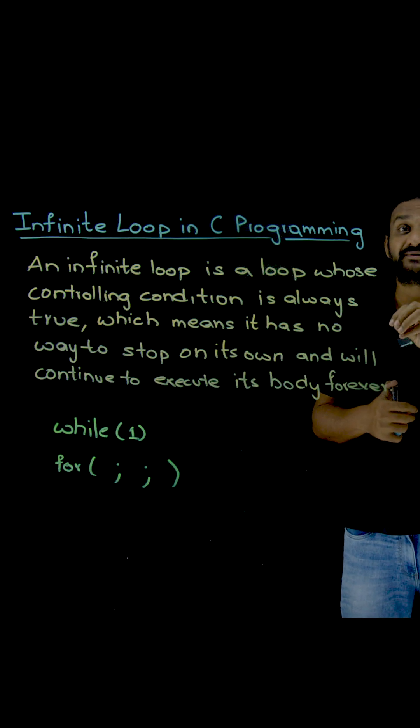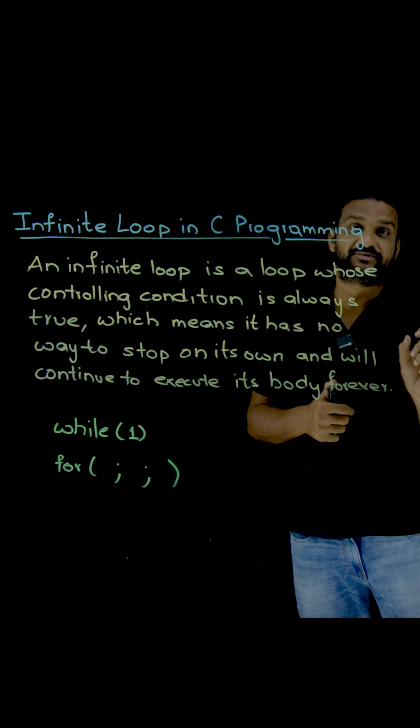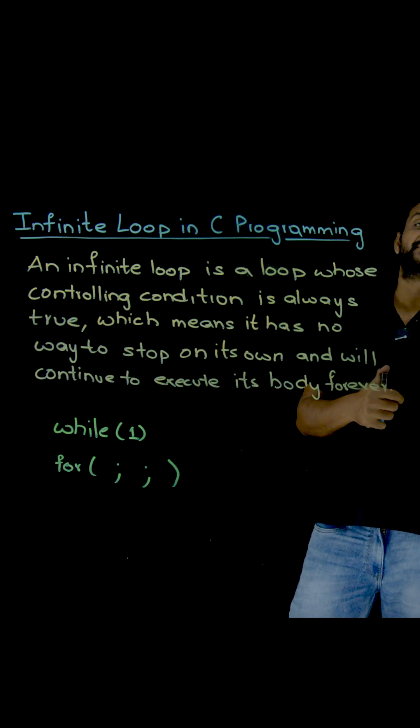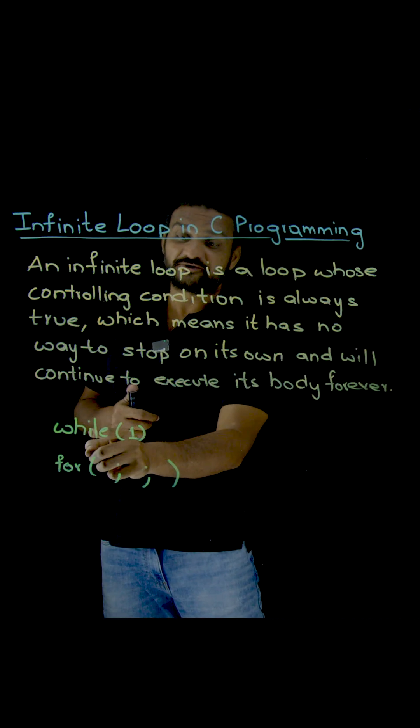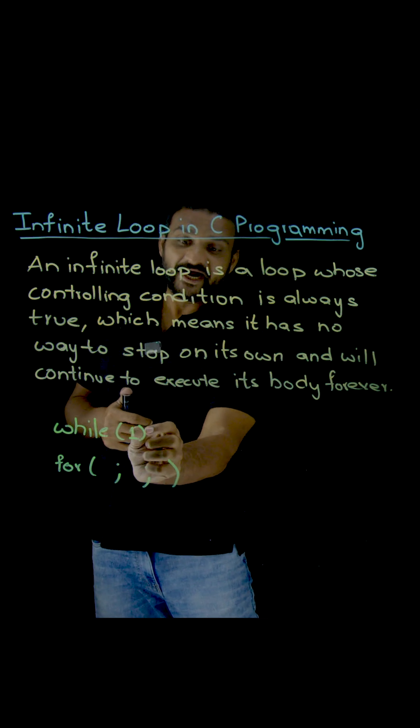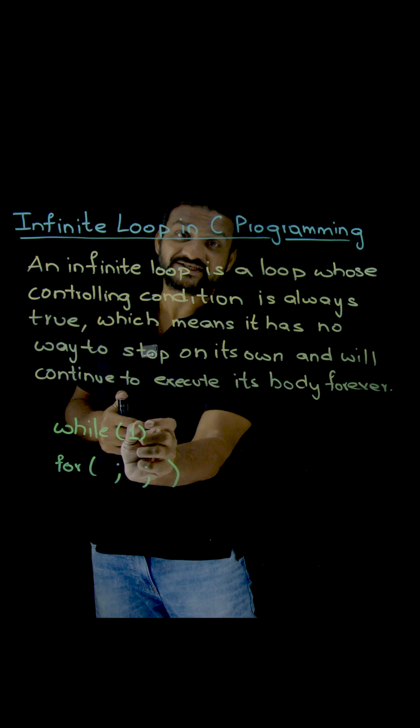But in case of programming simple programs, how can we create those infinite loops intentionally? For example, we generally create infinite loops by using while loops. If you give the conditional statement within this while loop as 1, what does 1 stand for? It means true.